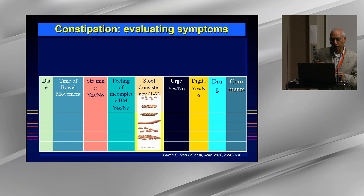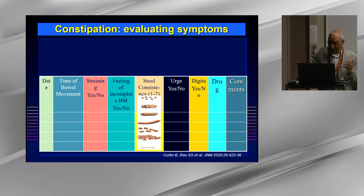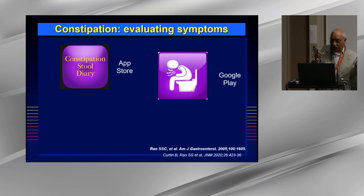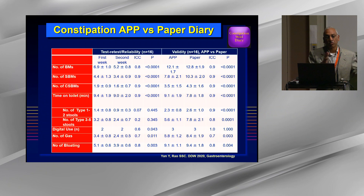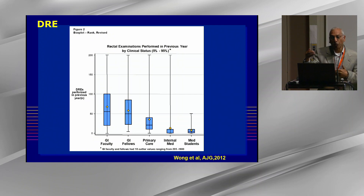The best way to improve our history gathering is to do prospective stool diaries — using either paper form stool diaries or digital apps. Everyone wants to carry their phone everywhere, particularly constipated patients who sit for quite some time and have all the time to fill it in. We tried to do a prospective comparison against the paper diary, validating it against the app. Within the first and second weeks, the app does fairly well in terms of interclass correlation, and when we compare the app with the paper form, there is fairly good correlation. So this does seem to work and may be one way to get a more accurate history.